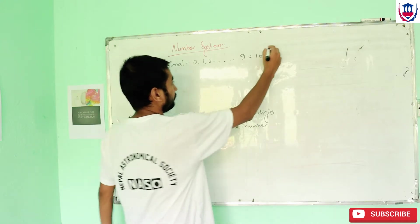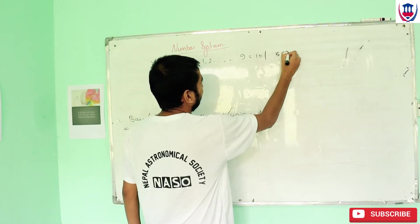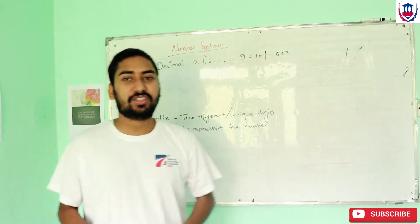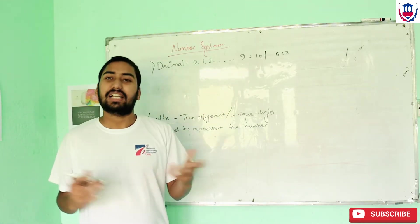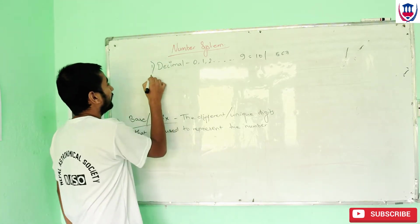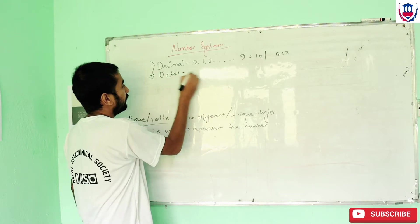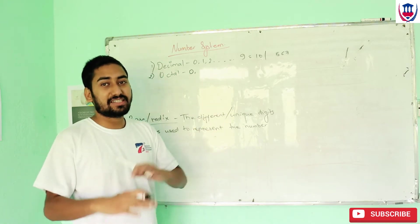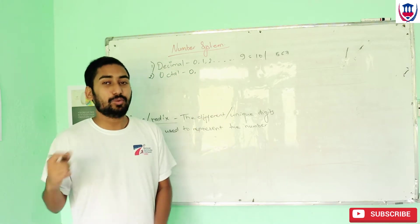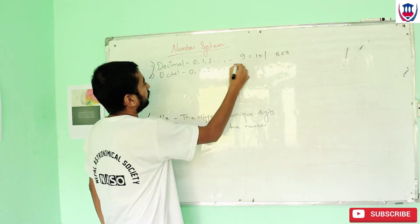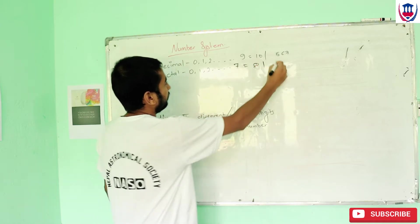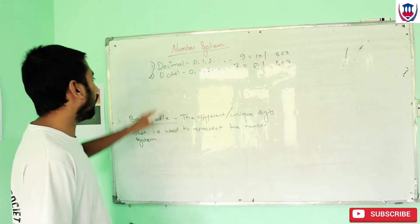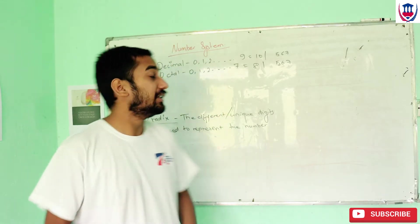Let's look at this example — I'm going to write 567. This is a decimal system. The second number system is octal. Octal means 'octa', which means 8. In computers, we always start counting from 0, so the digits go from 0 to 7, making the total 8 different digits. So 567 in octal uses digits 0 to 7.